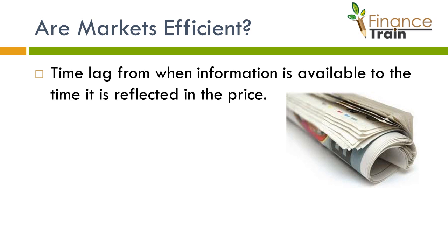So, are our markets really efficient? And how do we measure the level of efficiency? One way to do so is to determine the time it takes for trading activity to affect the price of the security — that is, the time the information is made available and then the time when the security's price actually reflects it. In a foreign exchange market, which is considered very efficient, this time lag may be less than a minute.